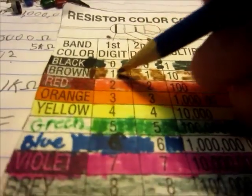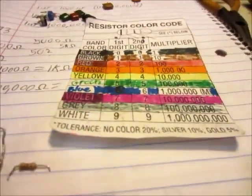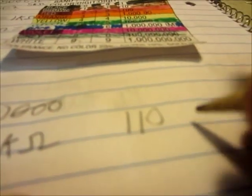Now we're going to do this one. This one is brown, brown, brown. So we have brown, that's 1, 1, and then 10, that's the multiplier. We've got 1, 1, 0. That's going to be 110 ohms. Pretty simple.